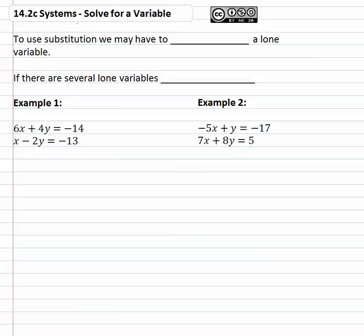What we're going to have to do is isolate a lone variable and sometimes we have the luxury of several lone variables where we can just pick any one we want. No one is better than the other.